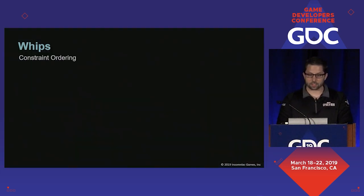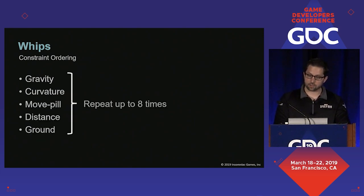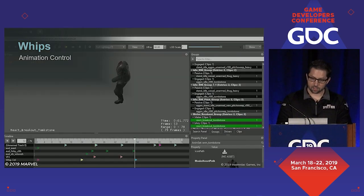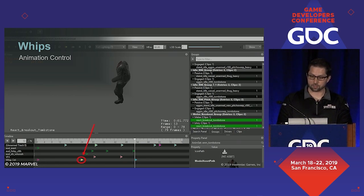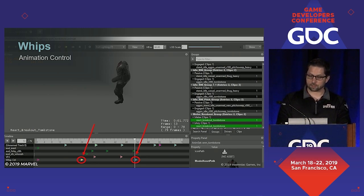The actual order that we apply constraints is gravity, then curvature, then move pill, then distance, then ground. Then we iterate over all of those up to eight times depending on how close the character is to the camera. For controlling if the chain is driven by animation or the sim, we start by assuming that it is always simulated. Then we place events on animation clips when the chain is supposed to transition to being animated and then again when it transitions back to being simmed — these events just contain a blend speed. That speed is used to change a zero to one value that represents what percent of the chain is simmed. No joint is ever driven by both sim and animation. We found that we got very good results with just this and that more wasn't necessary.